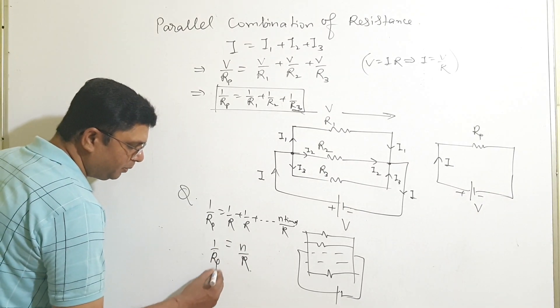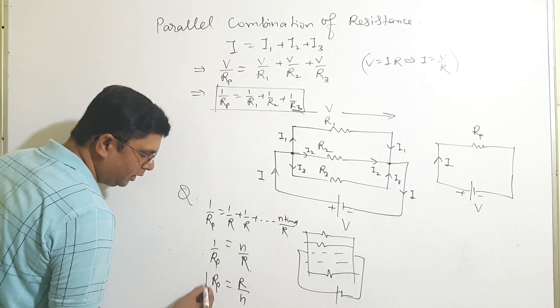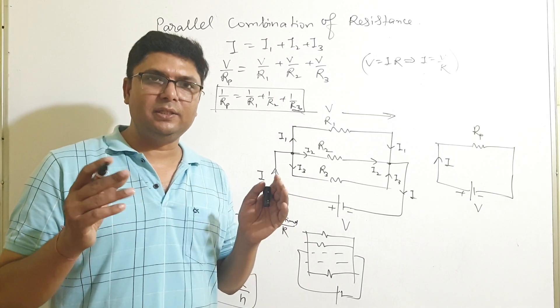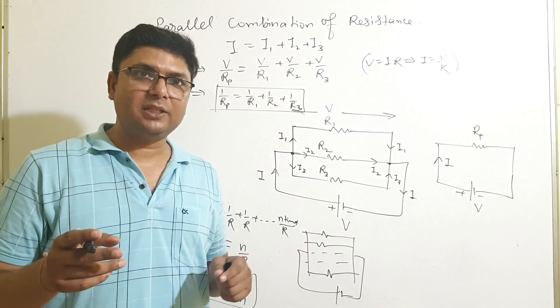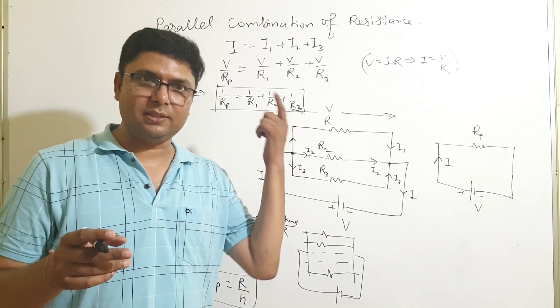So 1 by Rp, so Rp is equals to R upon N. Thus we have seen that in parallel combination resistance decreases, and in the previous lecture you have seen that in series combination resistance increases. Thank you.